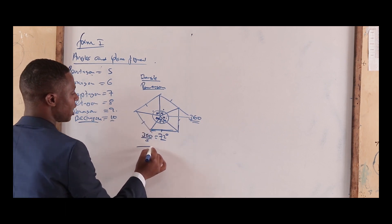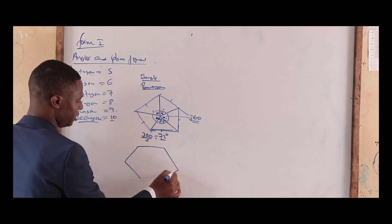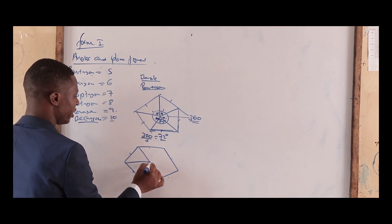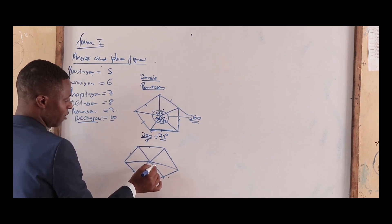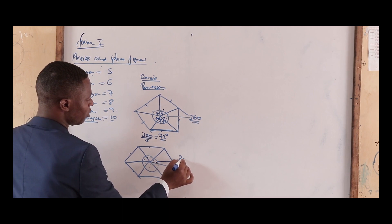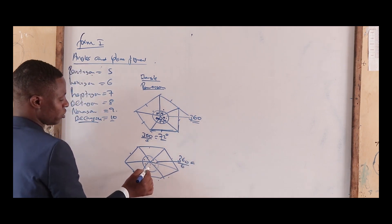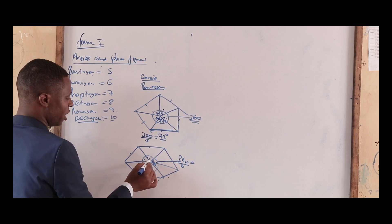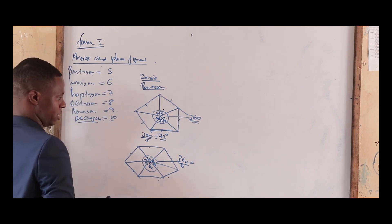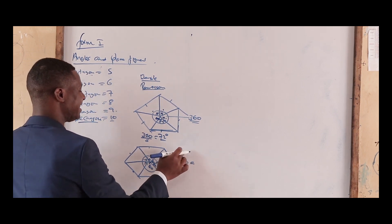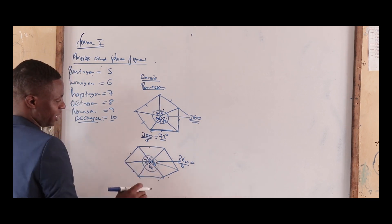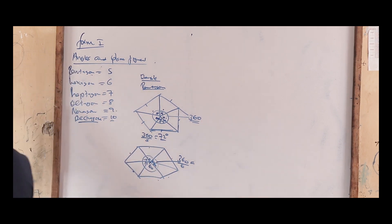If this figure were a hexagon with six sides, joining the vertices to the center gives six triangles. The angle at the center equals 360 divided by 6, which gives 60 degrees. So the angle at the center of any regular polygon is given by 360 divided by the number of sides of that polygon.